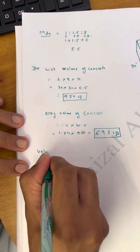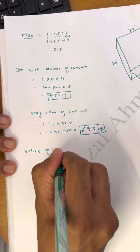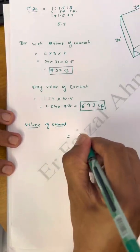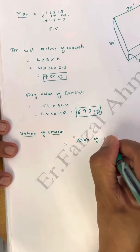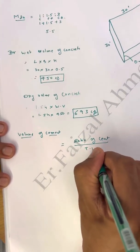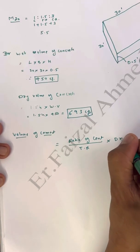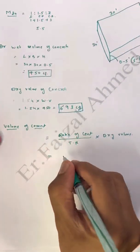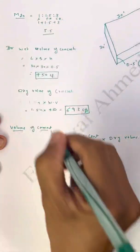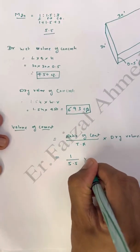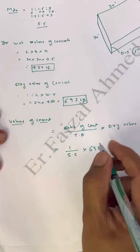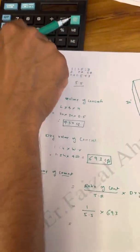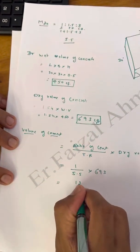Now, volume of cement = (ratio of cement / total ratio) × dry volume. The ratio of cement is 1, total ratio is 5.5, and dry volume is 693 cft. So volume of cement = 1 × 693 / 5.5 = 126 cubic feet.